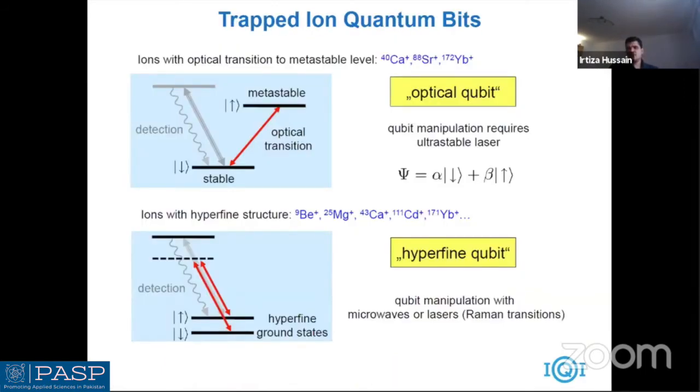In ion trapping how we can encode qubits there are two possible ways. The first way is by encoding qubits in the internal states, the electronic states of the ion like the metastable and the ground state. The other way is to do in the hyperfine states which is the ground states defining with the hyperfine states of the ion. For different species we can do with this thing, for example here we have calcium, strontium, ytterbium, and for hyperfine qubits we can do with beryllium, magnesium.